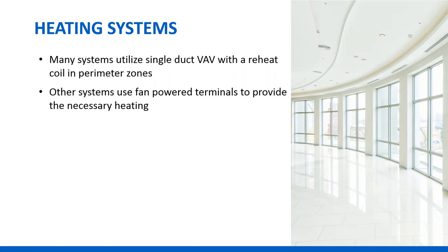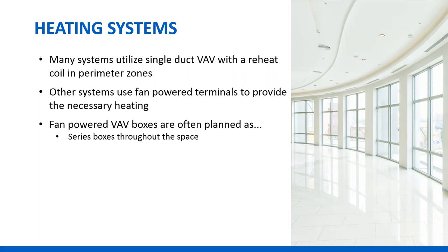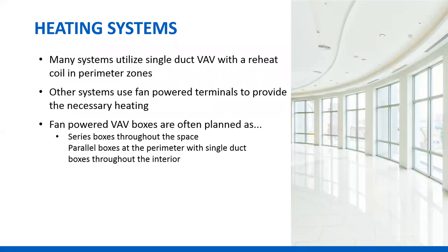Fan powered boxes come in two kinds: the series box and the parallel box. A series box has the fan on the discharge and is typically used throughout the space — Houston and Seattle are both series fan box towns. A parallel box has the fan running only when you need heat at the perimeter, with single duct boxes in the interior. That style is seen in Portland and Dallas. Apparently it's not a climate deal — it's a style thing about whether you're going to use series or parallel boxes.